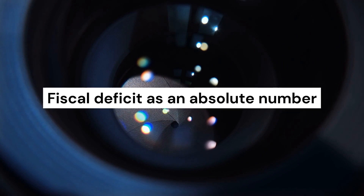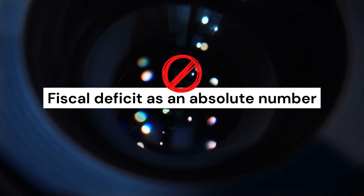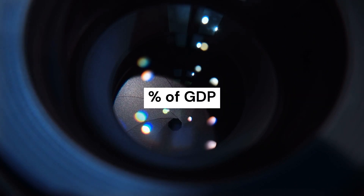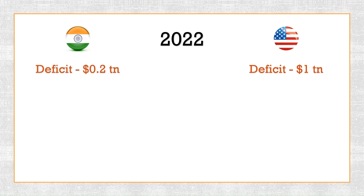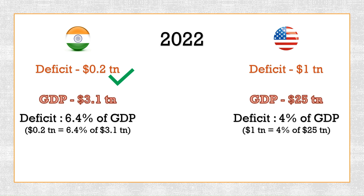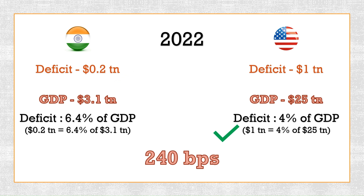One would argue that we cannot look at the fiscal deficit as an absolute number, and yes, that is correct. A well-rounded way to view a nation's fiscal deficit is to look at it as a percentage of that nation's GDP. Take India and the United States for example. In 2022, the US ran a fiscal deficit of around $1 trillion whereas India ran a fiscal deficit of only about $200 billion. Clearly India did better, right? As it turns out, the US did a whole 240 basis points better than India at managing its state finances that year.